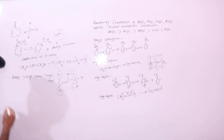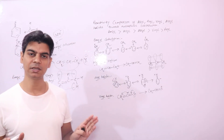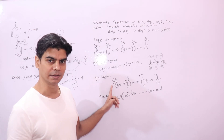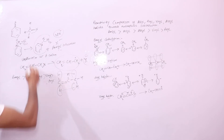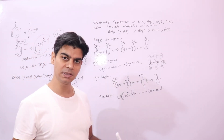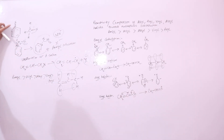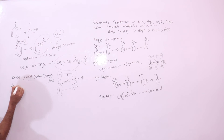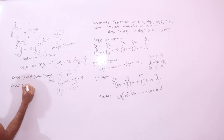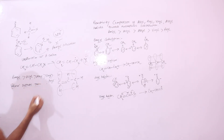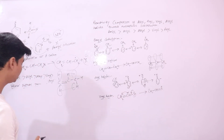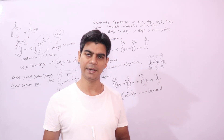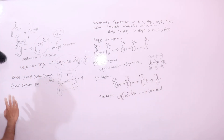Now, the silver nitrate test. We have studied the reactivity comparison of alkyl halides and aryl halides. Aryl halides are less reactive than alkyl halides. To distinguish between haloalkanes and haloarenes, you can use the silver nitrate test. If you get a question to distinguish between a haloalkane and any haloarene, just mention this test.